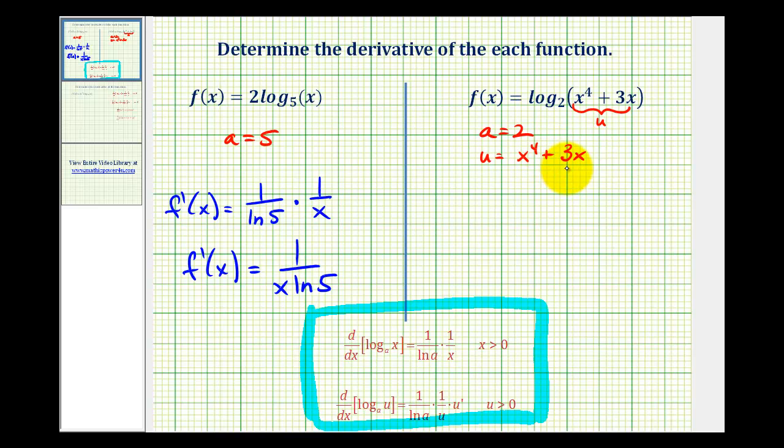So we will also need to determine du dx or u prime, which would be 4x to the 3rd plus 3.